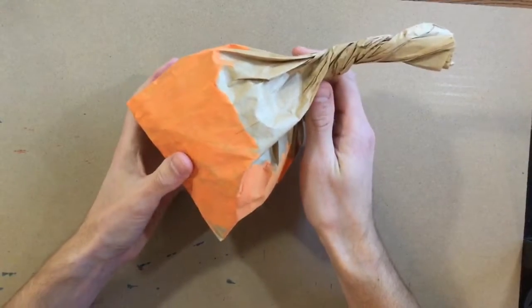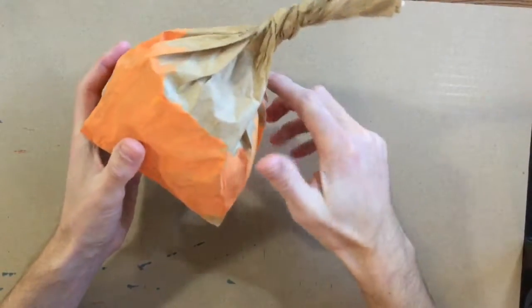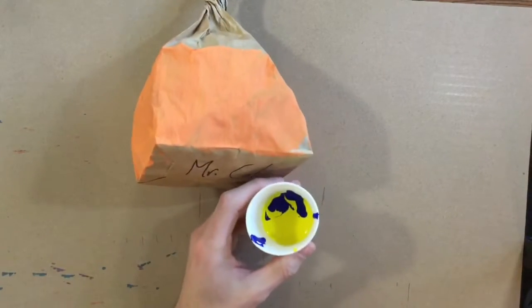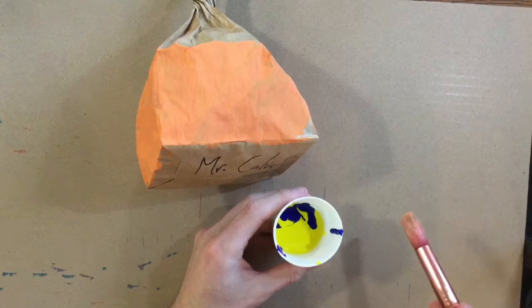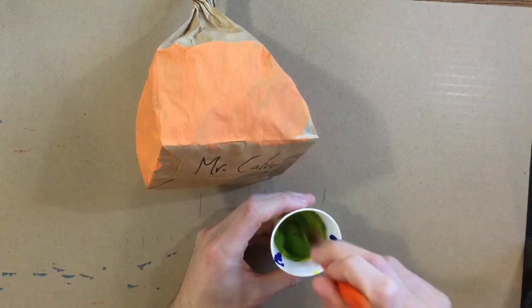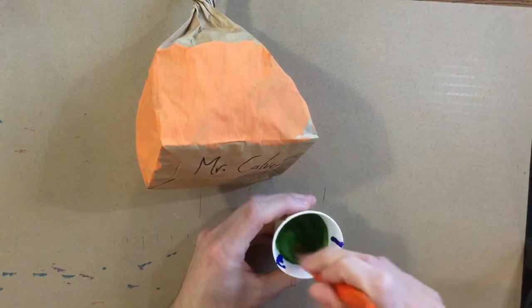We're going to finish up our 3D pumpkin by painting the stem green. As we just talked about, when we mix blue and yellow together, we get green. So you're going to get a little cup of yellow and blue, and you're going to gently mix that together with the paintbrush that you're going to get off the supply table.